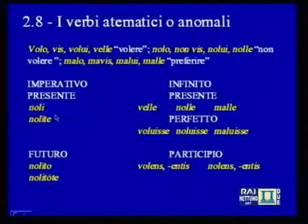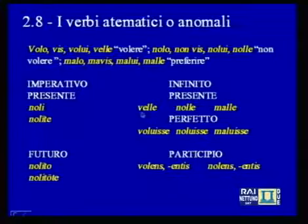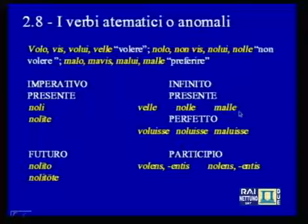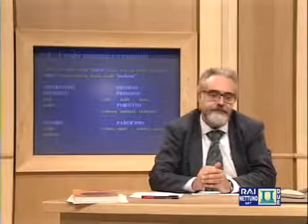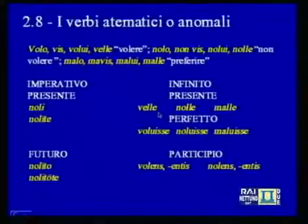Still on the same screen, alongside the imperative, you find the infinitive, which is constructed in a particular form: not with the ending '-re', but with an ending where the consonant has assimilated to that of the root. From 'vol-/vel-' we get 'velle'; from 'nol-/nel-' we get 'nolle'; from 'mal-' we get 'malle'. Thus the ending added to the root without any vowel provoked a change of consonant. The perfect is constructed regularly from the perfect indicative stem, and for the participles there are no particular problems either.